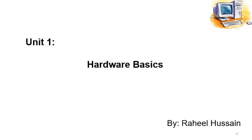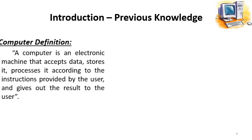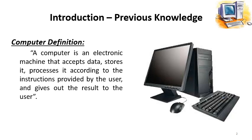Introduction and some previous knowledge. First of all, we will see how we can define a computer. A computer is an electronic machine that accepts data, stores it, processes it according to the instructions provided by the user, and gives the result to the user. This definition reveals the four basic operations performed by the computer system. The first operation is that a computer accepts data as input.